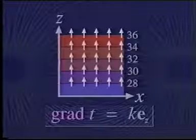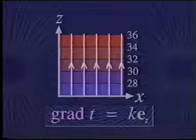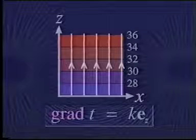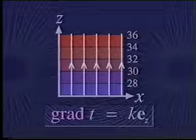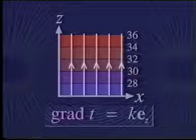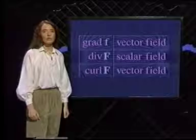We can also represent vector fields by field lines. For a constant vector field in the z direction like this one, the field lines look like this. You'll hear more about field lines in just a moment. Now let's move on to divergence.